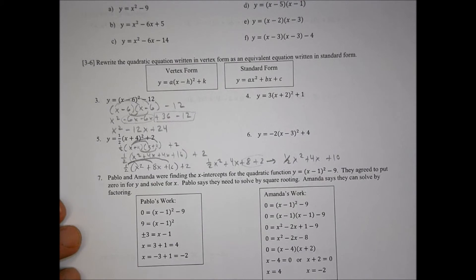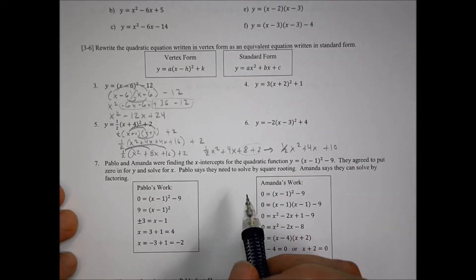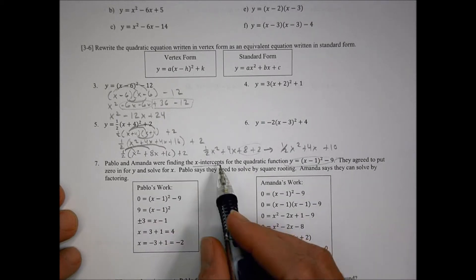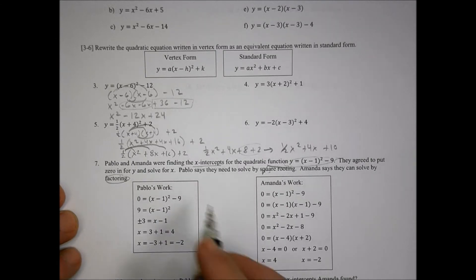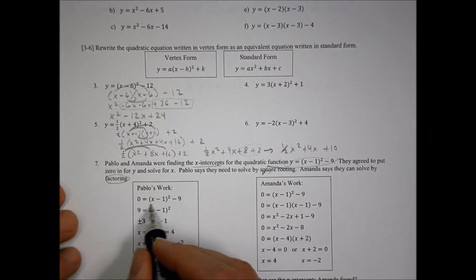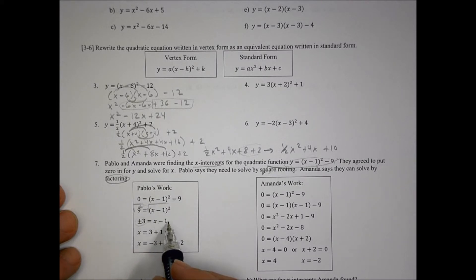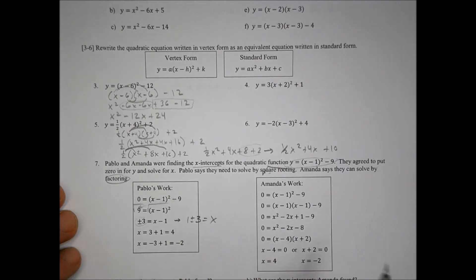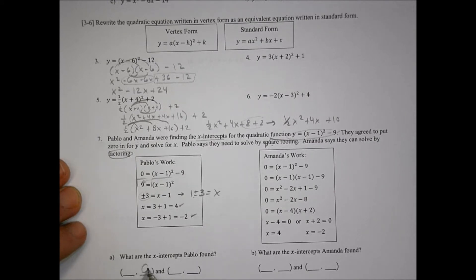Number 7 is about finding X-intercepts for the quadratic function. They agreed to put zero in for Y and solve for X. Pablo solves by square rooting: he moves the negative 9 over to get plus 9, leaving X minus 1 squared equals 9. Taking the square root of both sides gives plus or minus 3 equals X minus 1, so X equals 1 plus or minus 3 — giving X equals 4 and X equals negative 2.